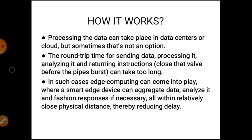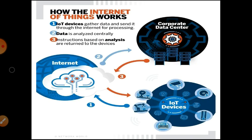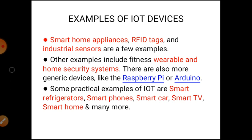This diagram shows how the Internet of Things works. IoT works in three steps: first, IoT devices gather the data and send it through the internet for processing; then the data is analyzed centrally; and in the third step, instructions based on the analysis are returned to the devices. Next, examples of IoT devices: smart home appliances, RFID tags, and industrial sensors are examples of IoT devices.